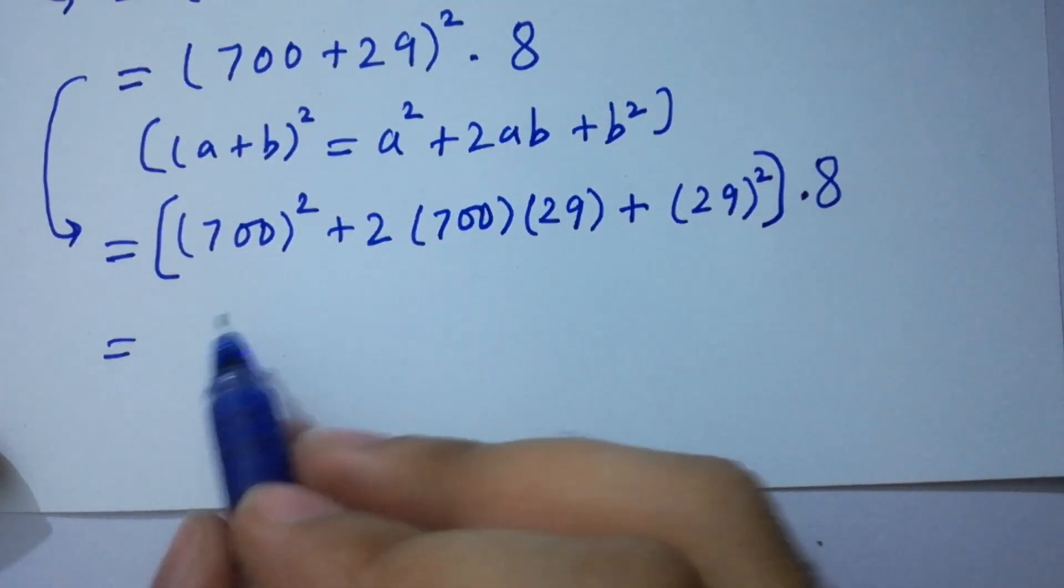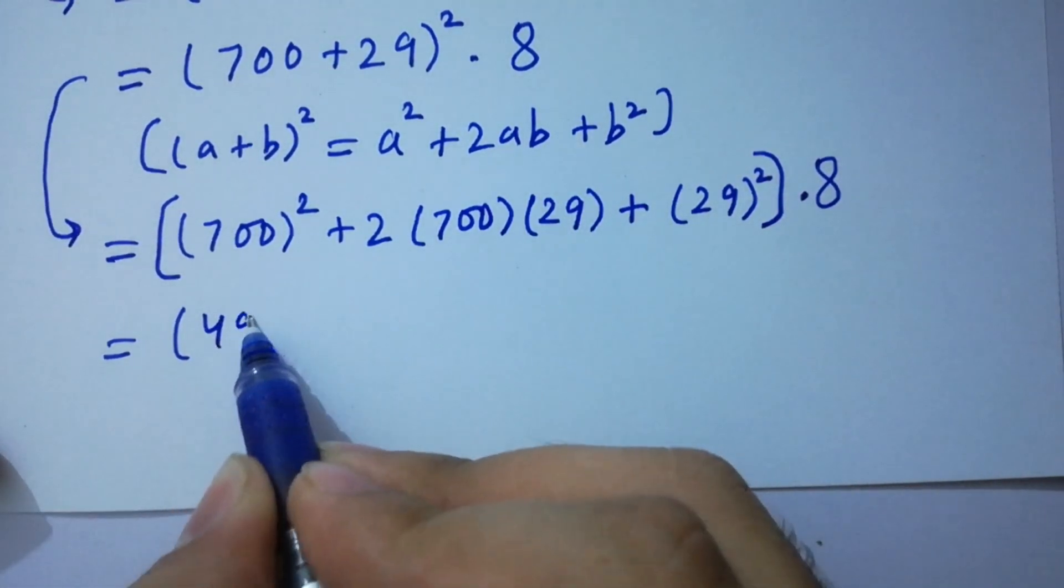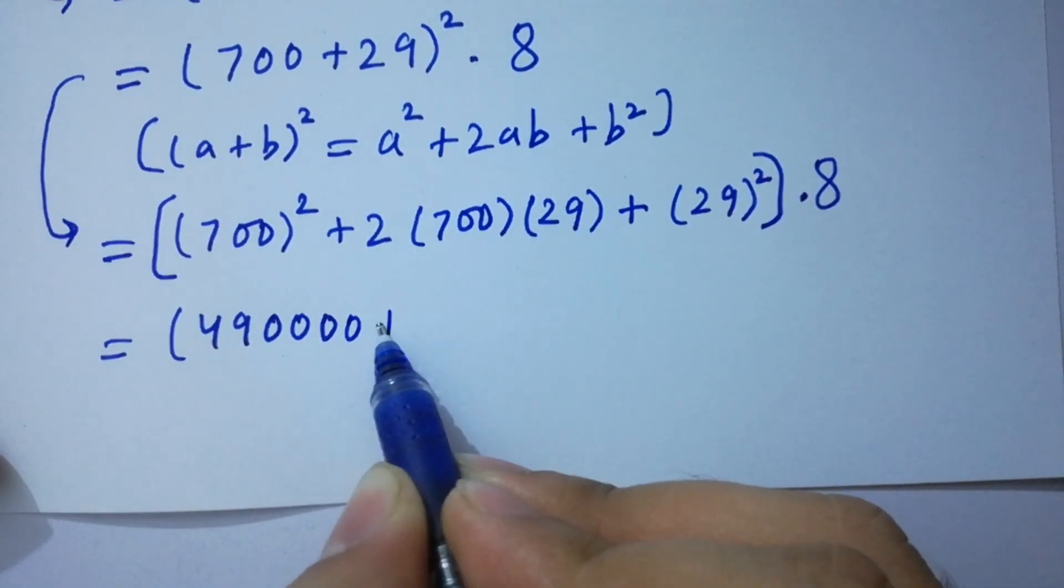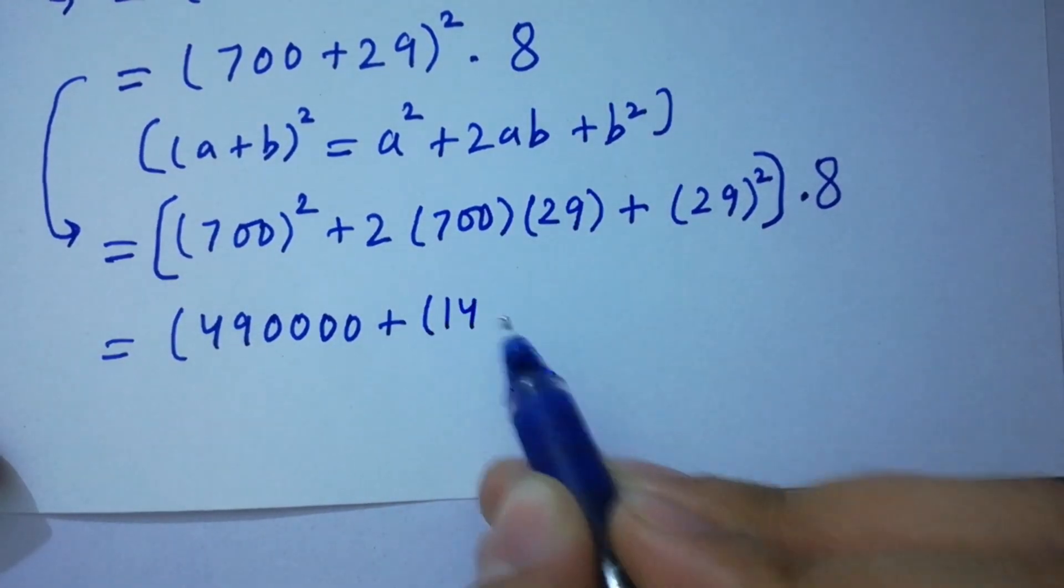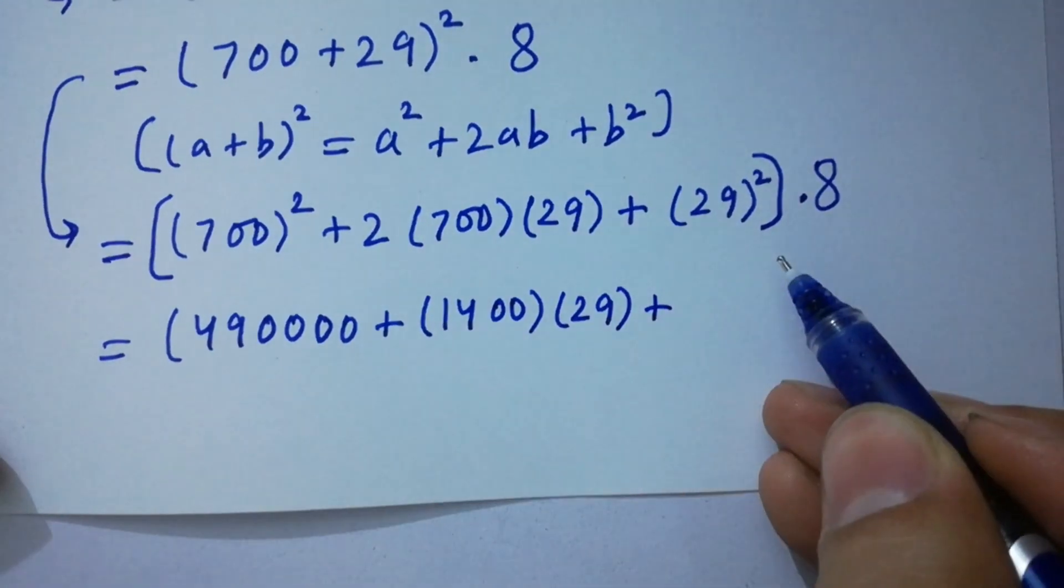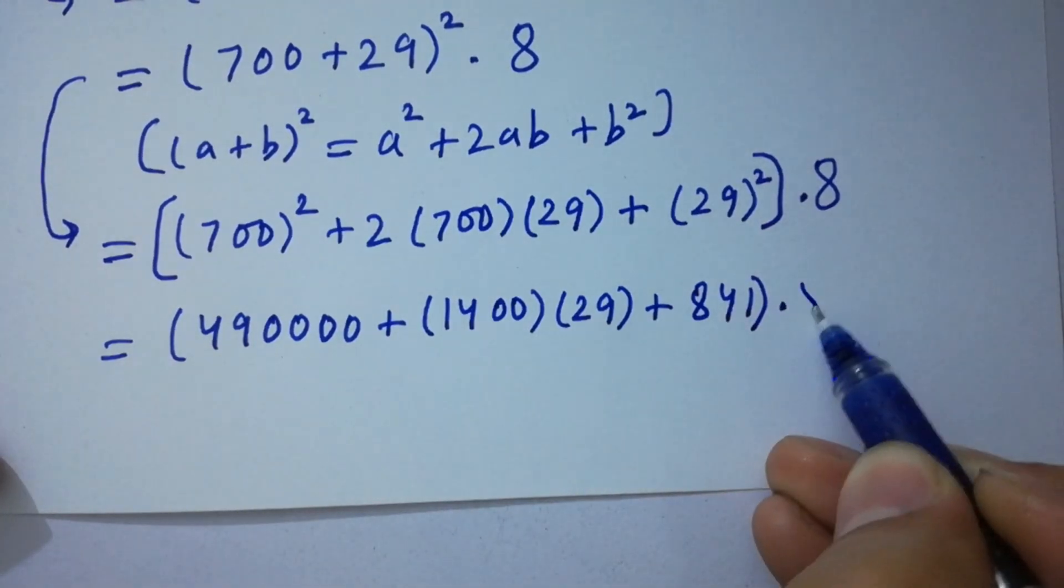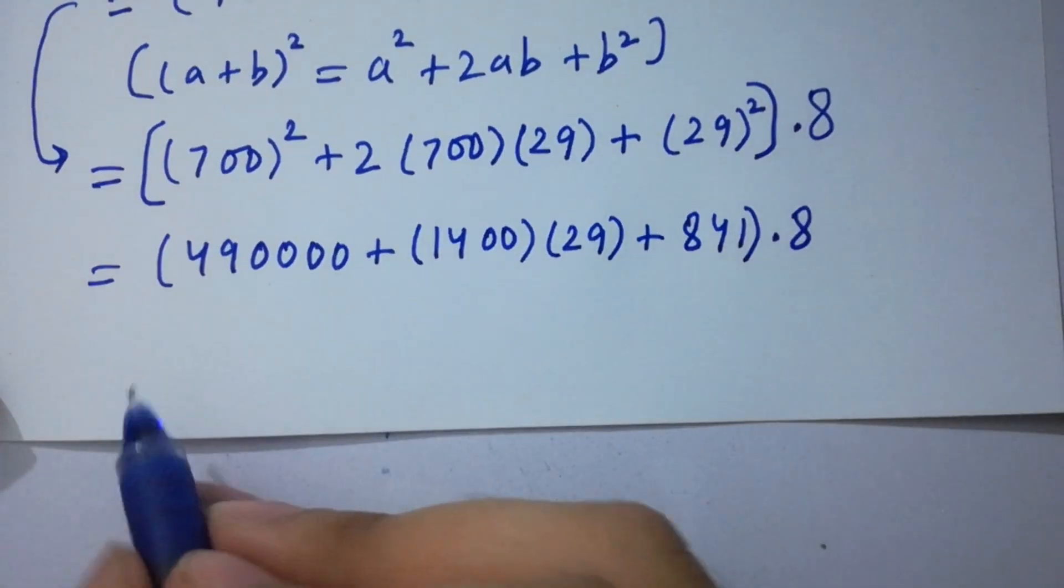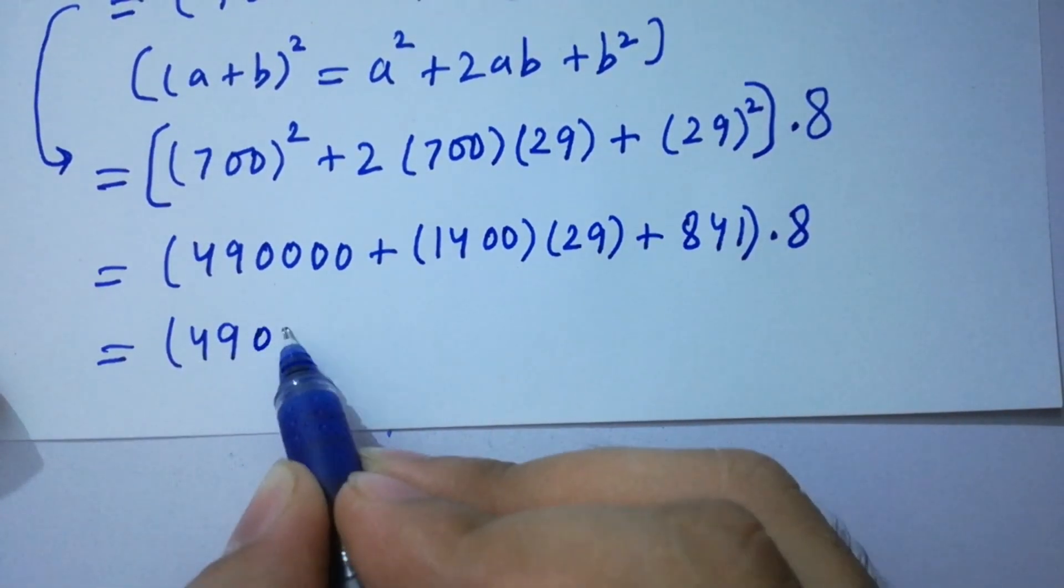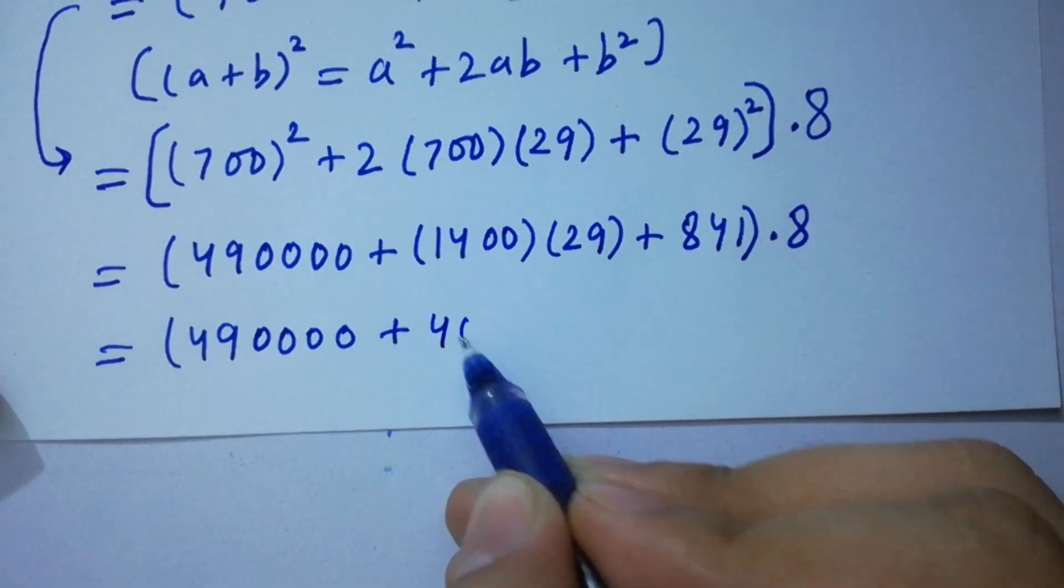It will be 700 times 700 is 490,000, plus 2 times 1400 times 29, plus 29 times 29 which is 841, times 8. So 490,000 plus 1400 times 29 is 40,600, plus 841 times 8.